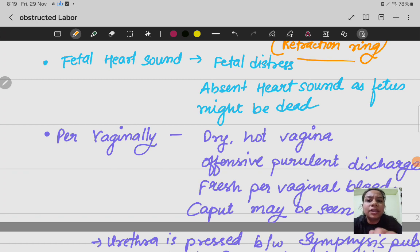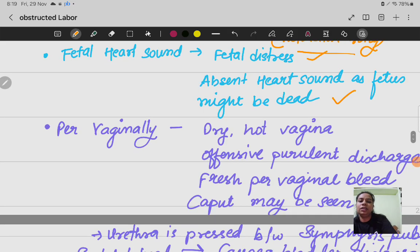Next is fetal heart sound. What will happen to the fetal heart sound in obstructed labor is fetal distress. Fetal distress because baby is continuously in the same position and baby is having respiratory issues. Even absent heart sounds may come as the fetus might be dead.